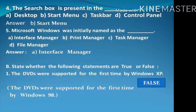Question number 4: The search box is present in the — . The options are: A. Desktop, B. Start Menu, C. Taskbar, D. Control Panel. The correct answer is B, Start Menu.